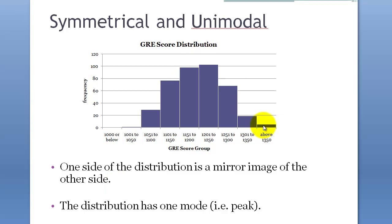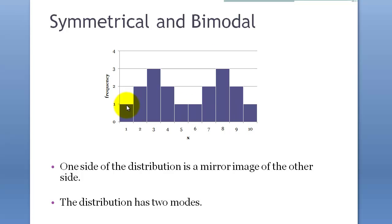Symmetrical and unimodal is just one peak point. This is also symmetrical but there are two peak points here. One and two. It's called symmetrical and bimodal.